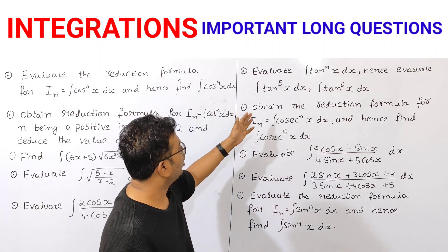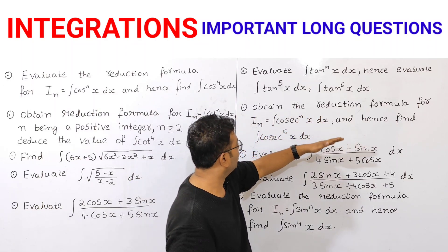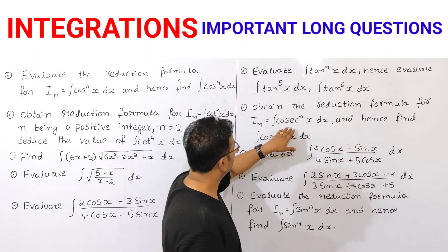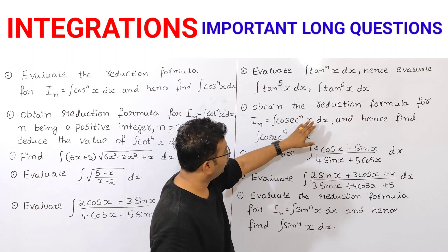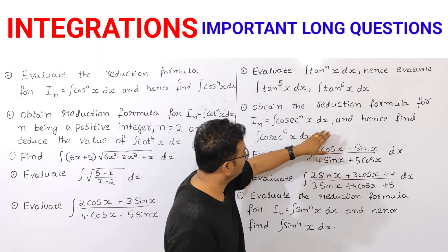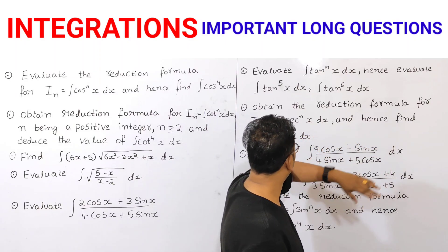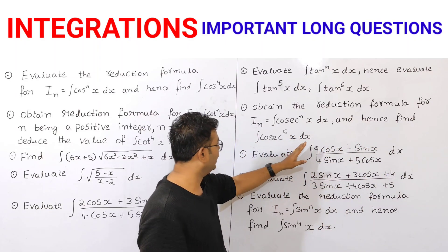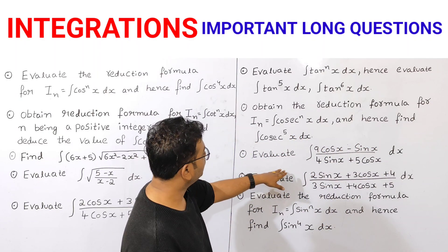Next, obtain the reduction formula for I(n) = integration of cos to the power of n of x dx, and hence find integration of cos to the power of 5 x dx.